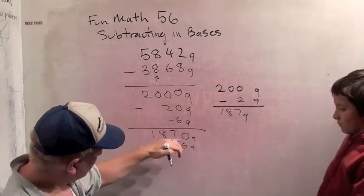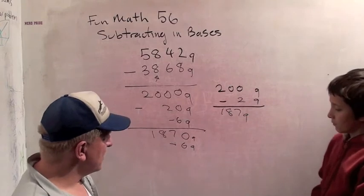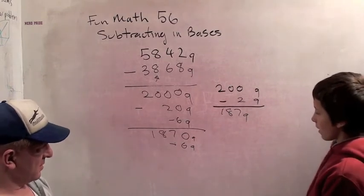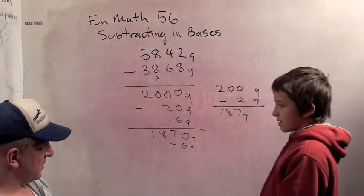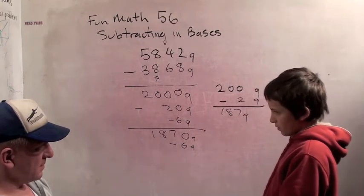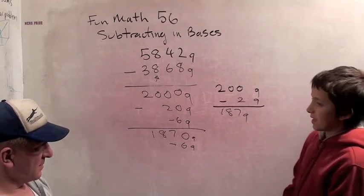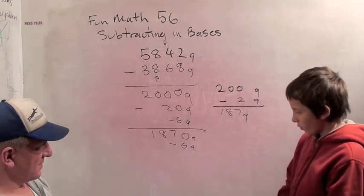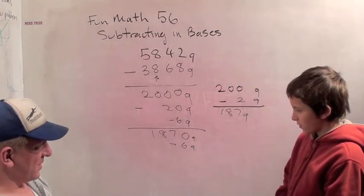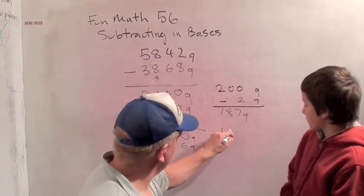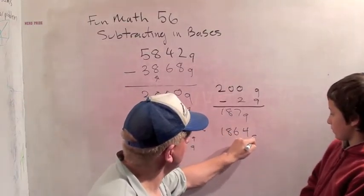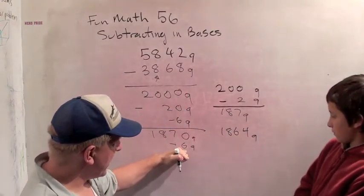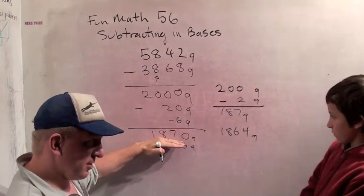Okay? Now we just have to do 1870 minus 6. What do you think that is? 1864. No, wait. 1864. No, wait. Let's check. 1864. If it was 1864 base 9, we would have to, when we add 6, we would get to 1870, right?